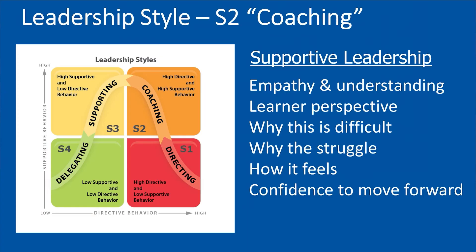When confronted with this quadrant, what the situational leadership model wants you to do is supply a higher degree of supportive leadership in addition to directive leadership. By supportive leadership they mean embodying good empathy and understanding — looking at it from the learner's perspective, their point of view. Why do they think it's difficult? Why are they struggling? How does it feel? You want to let them know there's a way forward, give them confidence to go forward and try again, re-engage, keep going — that this can be done.